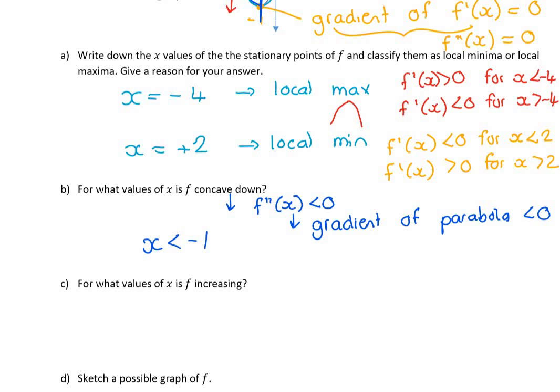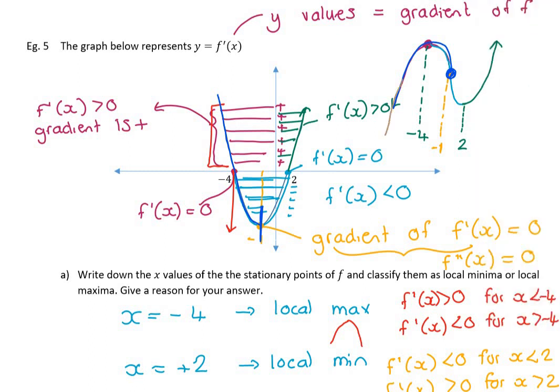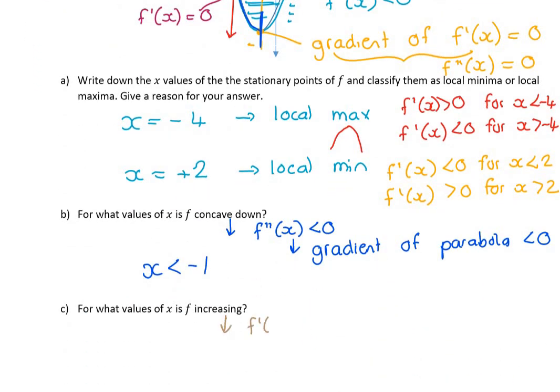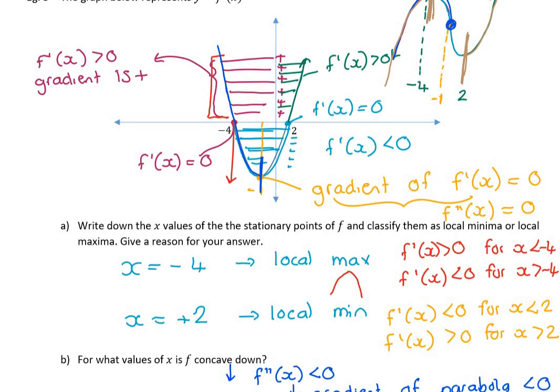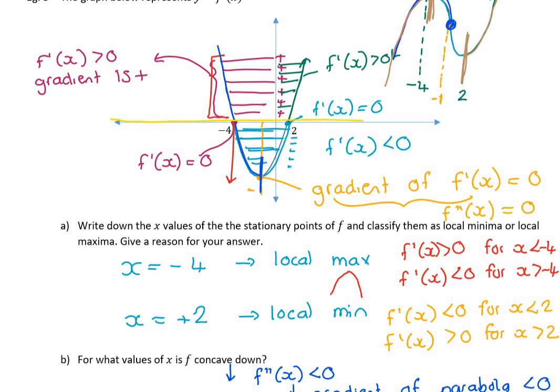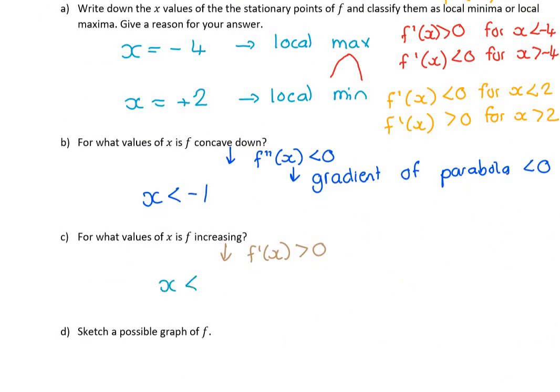For what values of x is f increasing? Well, again, I could look at the cubic that I drew. Where is the cubic going up? It's going up before the first turning point and after the second turning point. I could have also just looked at when it's increasing—you want f'(x) to be positive. I could actually just solve this from an inequality point of view and look at my parabola. That is where my parabola would be equal to 0, so above 0 would be there and there. So I would argue that my x's have to be less than -4 or my x's have to be greater than 2.